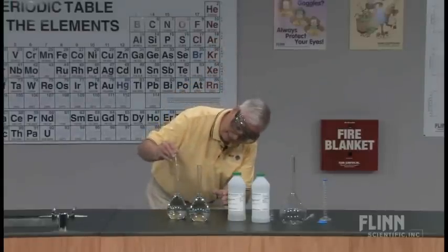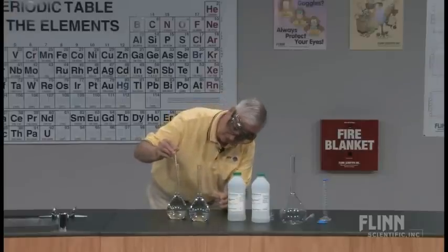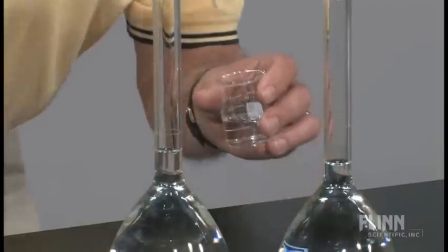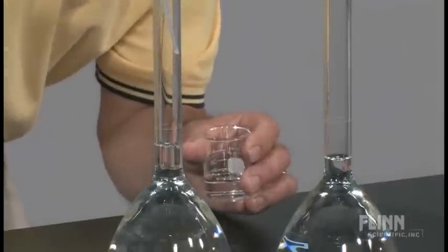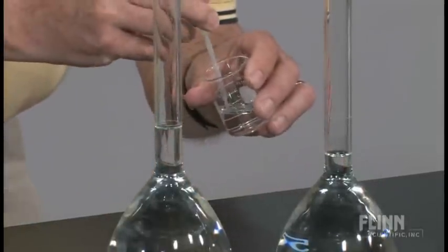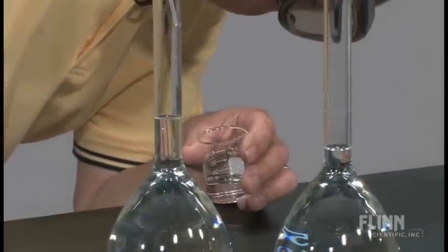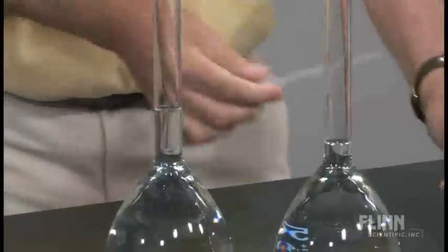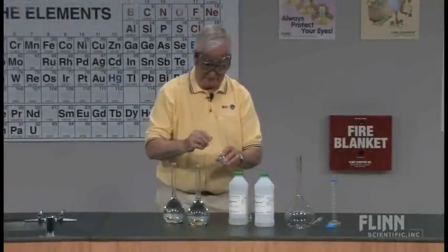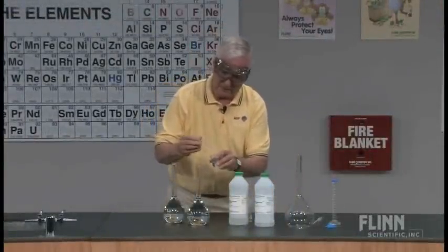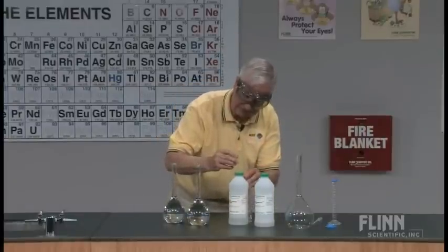I'm going to do that by adding and bringing it up right to the line of the volumetric flask. No doubt you have some volumetric flasks in your laboratory — they are usually used to prepare molar solutions. We want exactly 500 milliliters of the 2 molar sodium hydroxide and exactly 500 milliliters of the 2 molar hydrochloric acid solution.